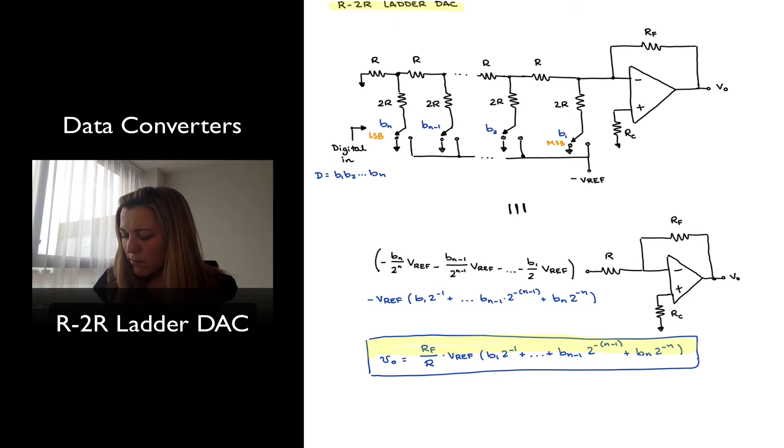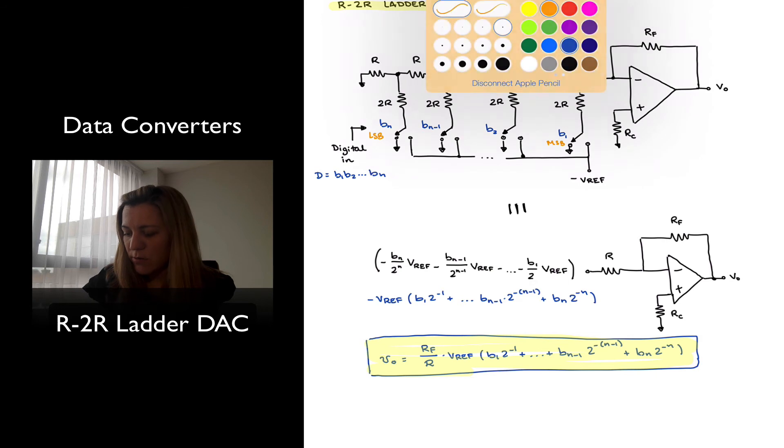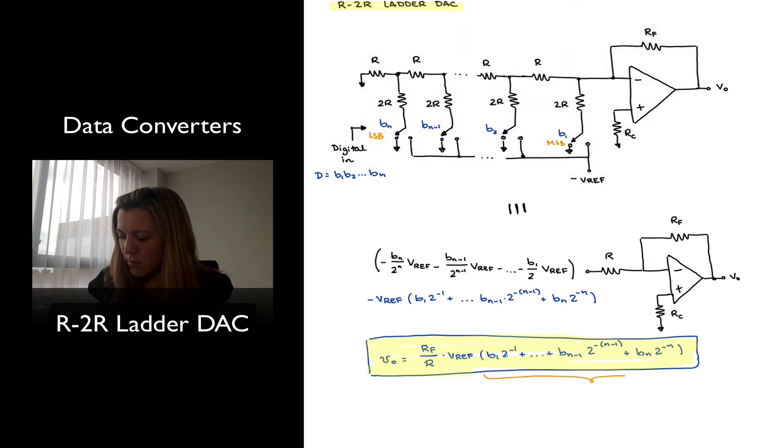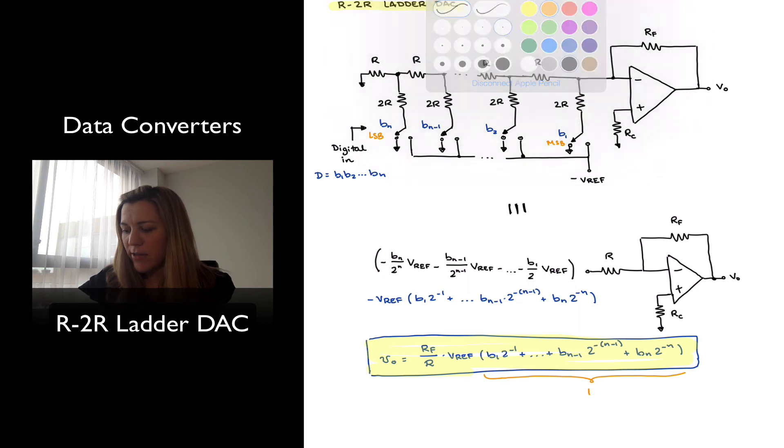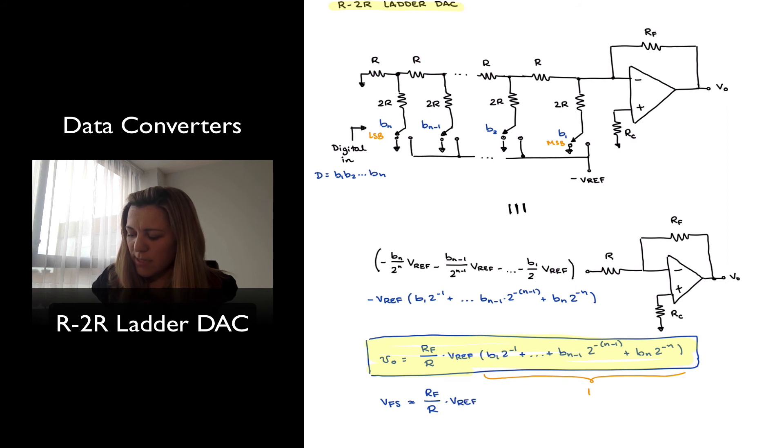Notice that my full-scale voltage in this case is going to correspond whenever my expression within those parentheses is equal to 1, or this expression right here is equal to 1, which is never going to happen until n reaches infinity. So it's going to tend towards 1, get closer to 1, the closer n gets to infinity, or the higher the n value. So my VFS will be equal to then RF divided by R times VREF. Notice that this is half of what we have for the standard linear combiner circuit.